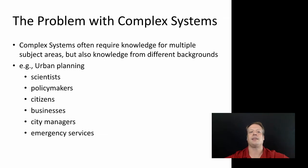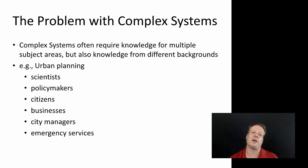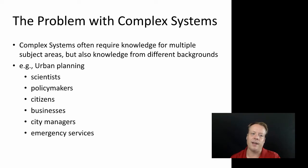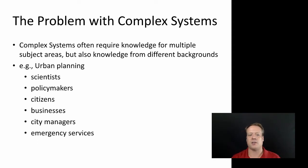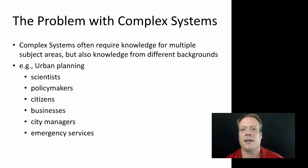Let's set this context around a particular idea: the problem of complex systems, as great as it is as a way to understand the world around us, is that they often require knowledge from multiple subject areas, but also knowledge from people with multiple different backgrounds. For instance, to tackle the urban planning problem, you need scientists who can tell you about environmental impacts, policy makers to figure out appropriate policies, citizens to provide input on how the new urban plan would look, and businesses to understand how the plan will affect their operations.